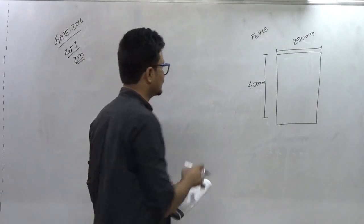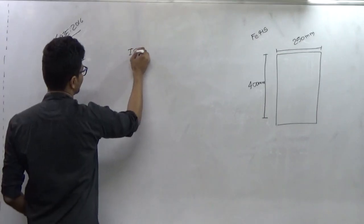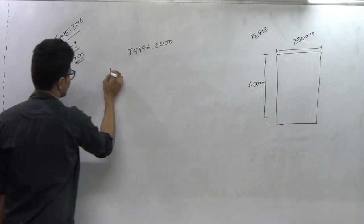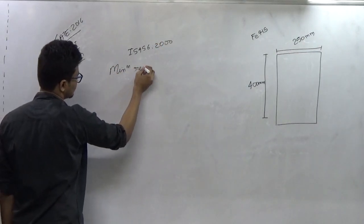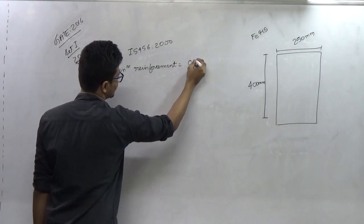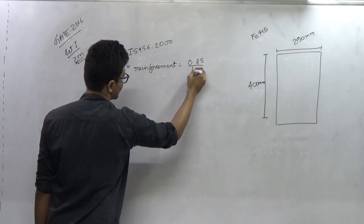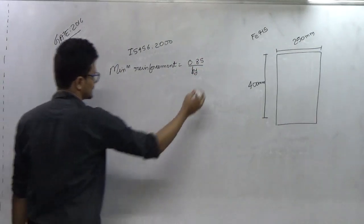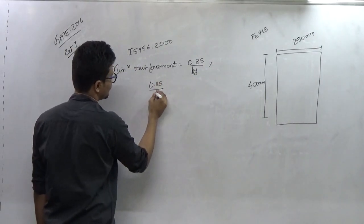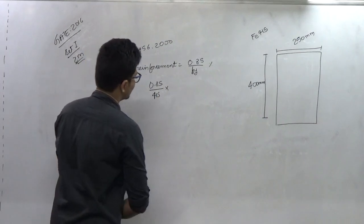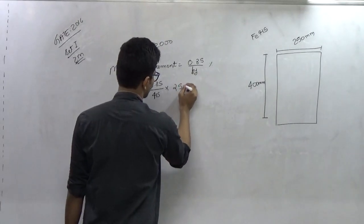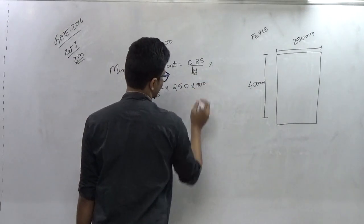As per IS 456-2000, minimum reinforcement is given by 0.85 by Fy, which is 415. So 0.85 divided by Fy 415 percentage. If we have to calculate in terms of area, then we have to multiply this with 250 into 400, the dimensions of the section.